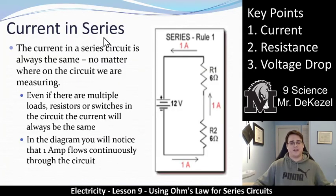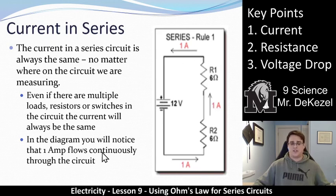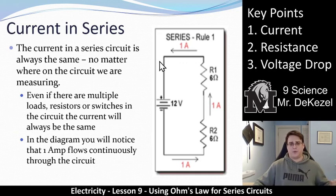Key point 1: current in series. The current in a series circuit is always the same no matter where on the circuit we are measuring. Even if there are multiple loads, resistors, or switches, the current will always be the same. In the diagram, one amp is continuously flowing throughout because everything is in series. That is rule number one for series circuits — the current is the same everywhere. If we know the current in one place, we know it for all the rest.